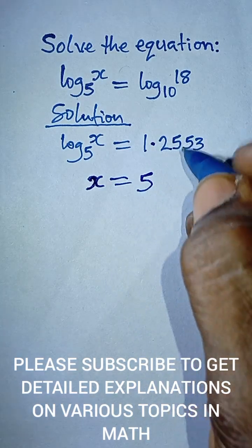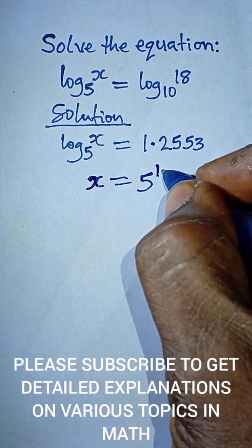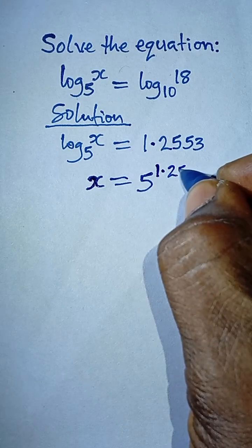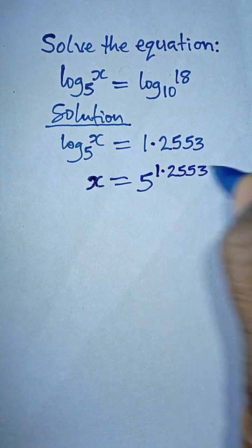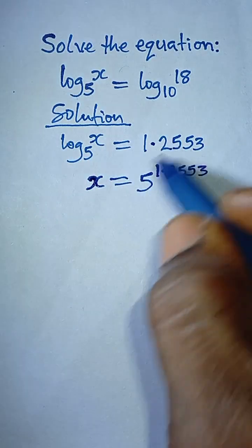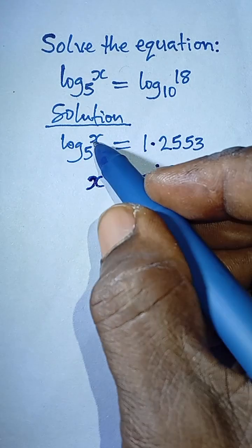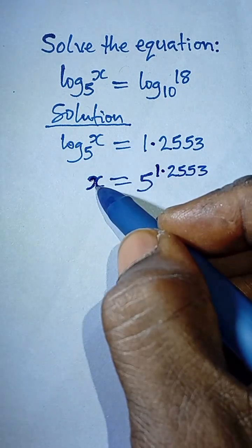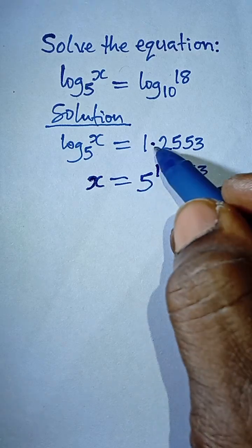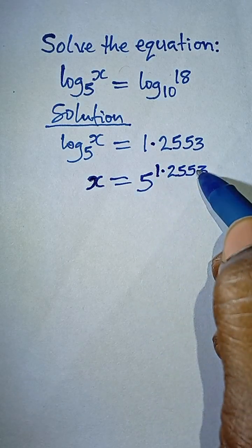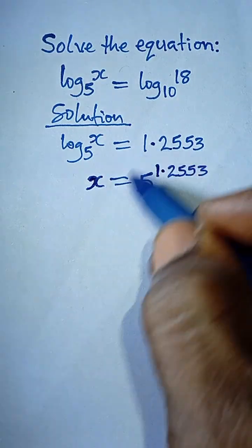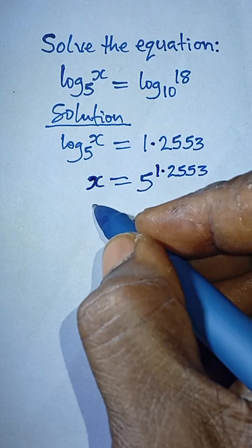And then this answer becomes the power, so 5 raised by 1.2553. This is how to convert logarithm to indices: you simply take the x here, the value here, and it equals the base here you take, and then this answer becomes the power.